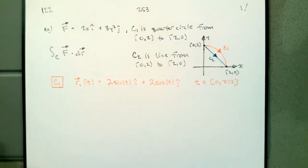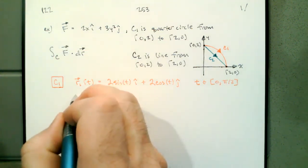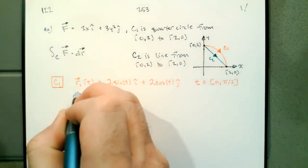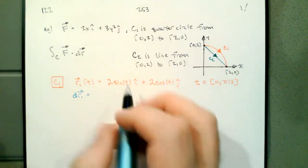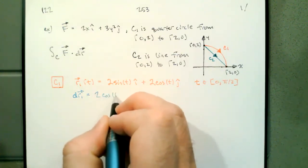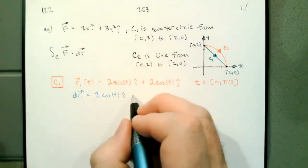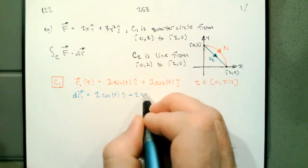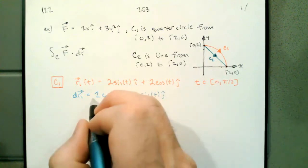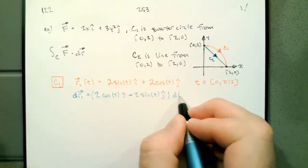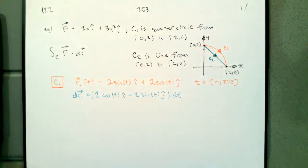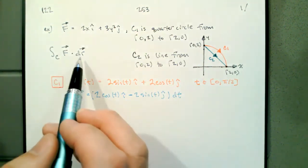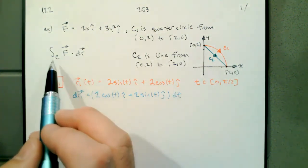So we need to compute dr, which is just the derivative of our parameterized curve — the direction. So dr₁ = (2 cos t) i − (2 sin t) j, all times dt. We're just taking the derivative of r₁ with respect to t, then multiplying both sides by dt. This will go directly into our line integral, giving us the dt we need, and we'll integrate over the values of t.